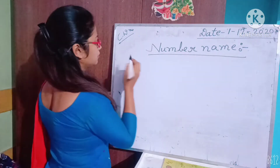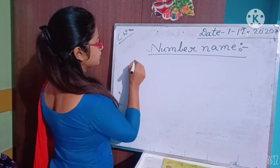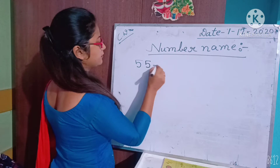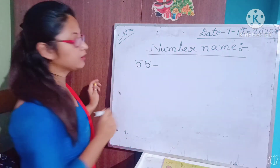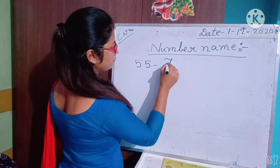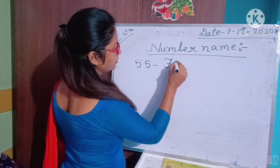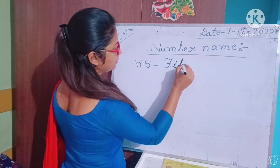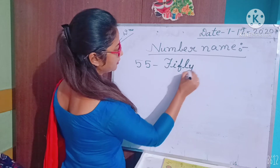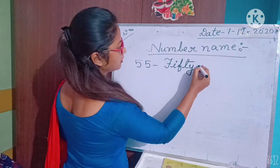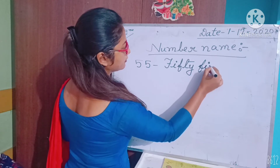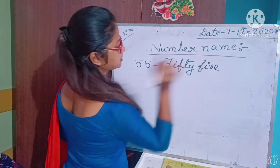So the first number is 55. What is the spelling of 55? F-I-F-T-Y F-I-V-E. 55 — fifty five.